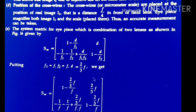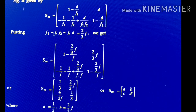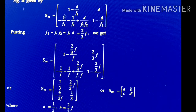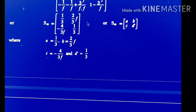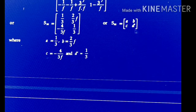Now the system matrix for the Ramsden IPS: SM = [[1 − D/F1, D], [−1/F1 − 1/F2 + D/(F1·F2), 1 − D/F2]]. Putting F1 = F2 = F and D = 2F/3, we get SM = [[1/3, 2F/3], [−4/3F, 1/3]]. Comparing with the general form SM = [[A, B], [C, D']], we get A = 1/3, B = 2F/3, C = −4/3F, D' = 1/3.